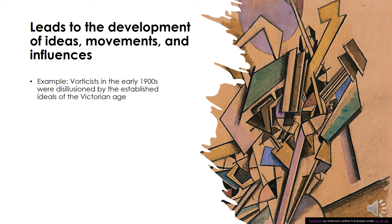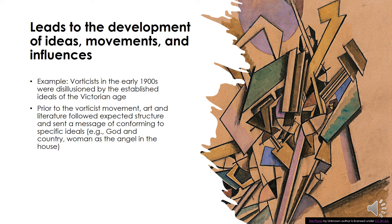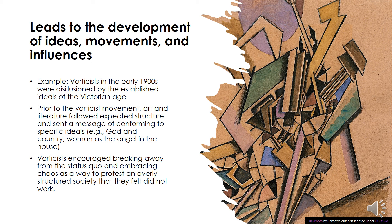Another example of aesthetics leading to the development of ideas, movements, and influences is the Vorticist movement. In the early 1900s, they were disillusioned by the established ideals of the Victorian age. Prior to the Vorticist movement, art and literature followed expected structure and sent a message of conforming to specific ideals — god and country, woman as the angel in the house. The Vorticists encouraged breaking away from the status quo and embracing chaos as a way to protest an overly structured society. They broke away from the rules of literature, format, font styles, and the way to express themselves in poetry, finding new ways of putting information together that did not follow structured rules.